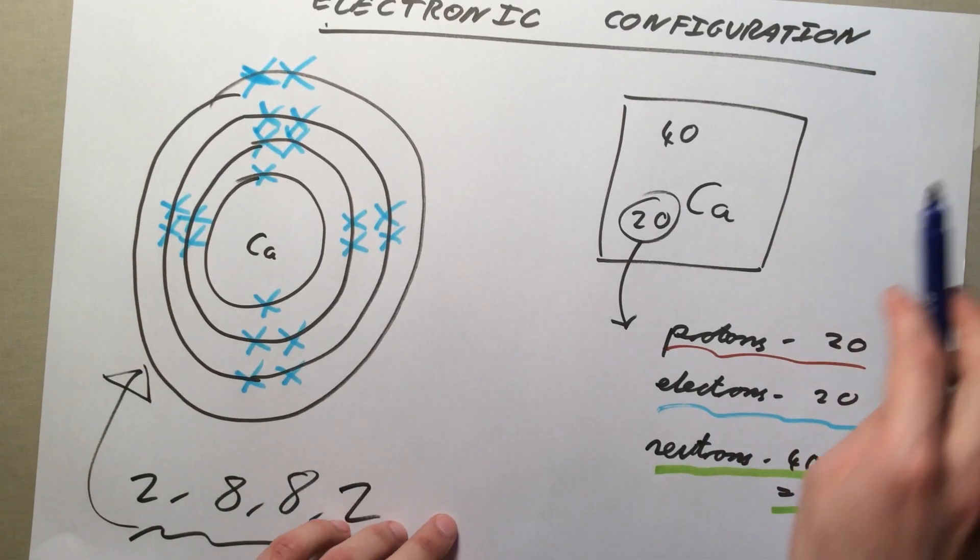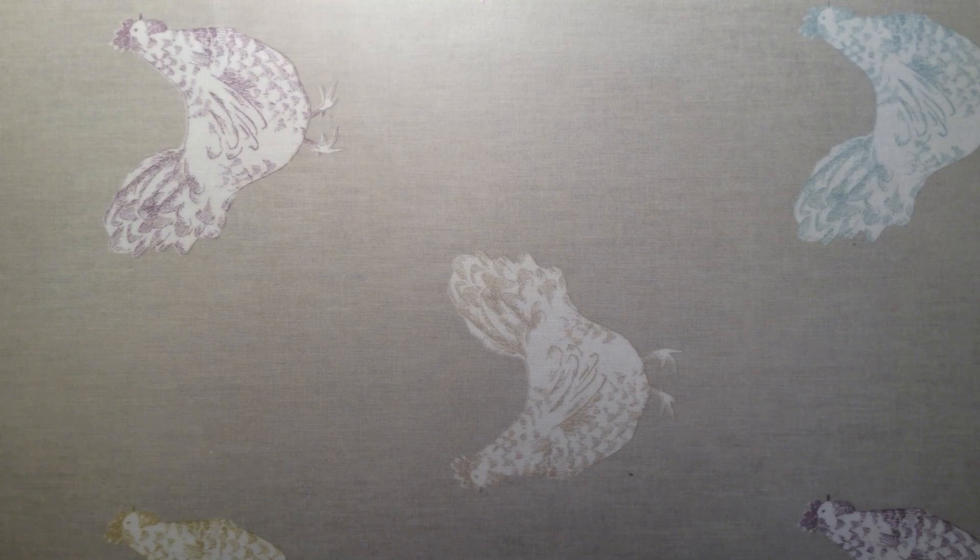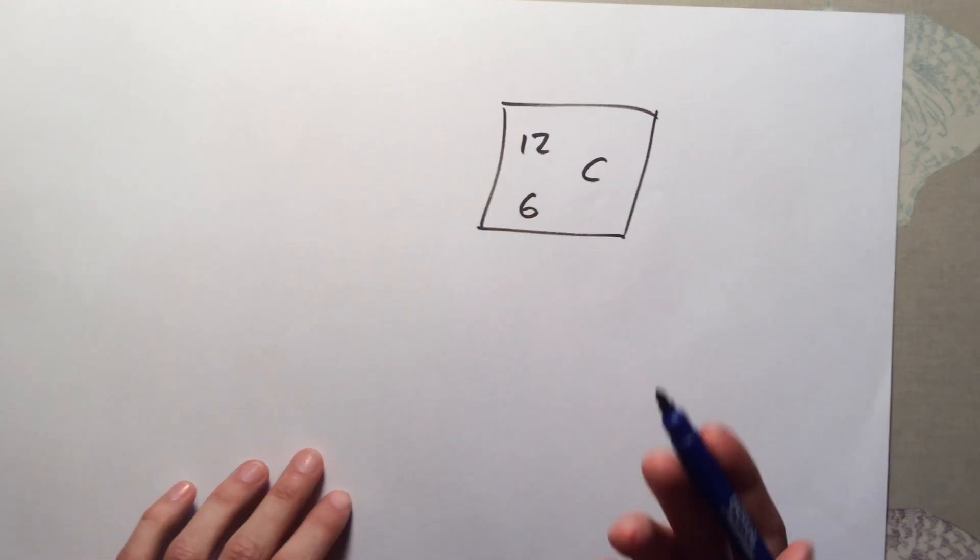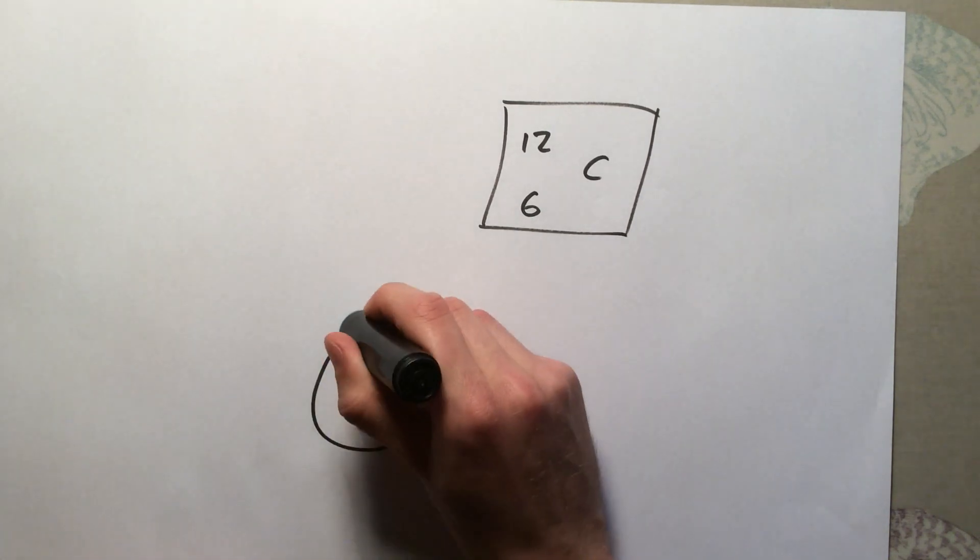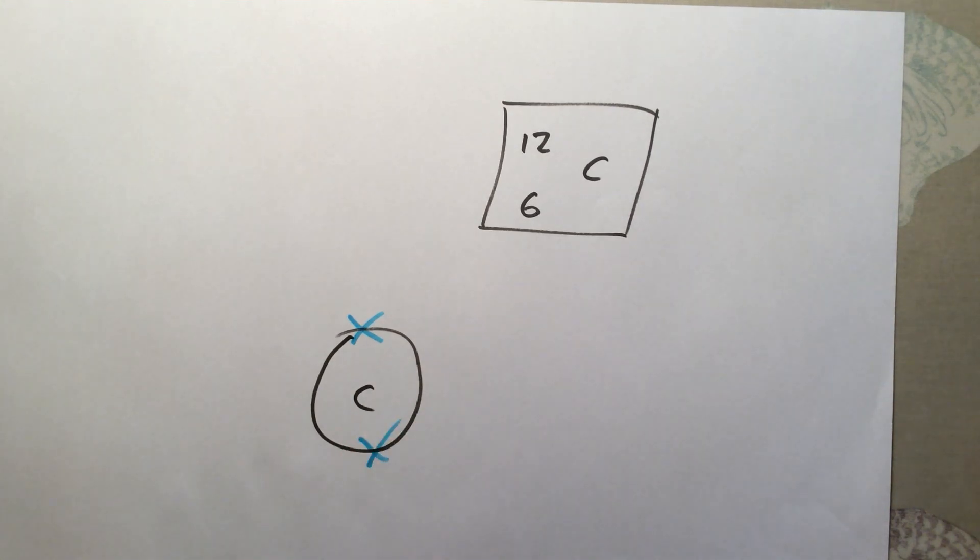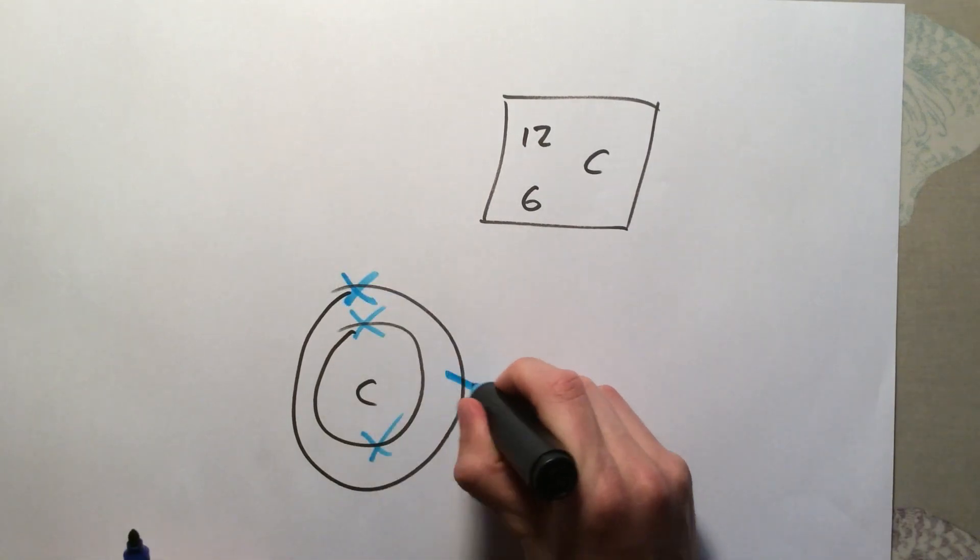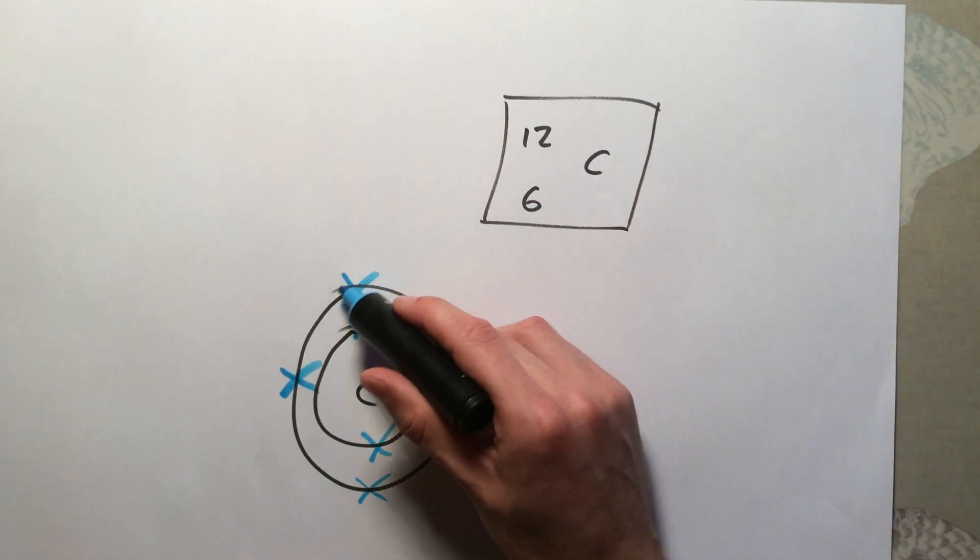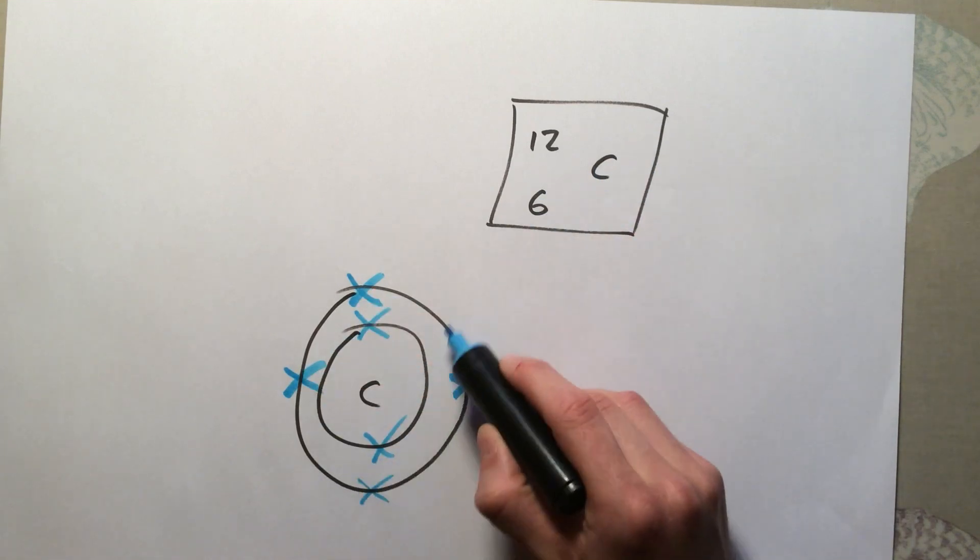Just to give you one more example, let's take carbon. Carbon's symbol is 12 over 6 C. Again, I'm just going to show my nucleus with a C. In my first shell, I can fit in two electrons. Remember, I need to get up to six here. In my second shell, I am going to fit in four. You can put them wherever you like. Remember, this actually ties in with the group of the periodic table. Carbon is in group four. If you look at it on the periodic table, that means it has four outer electrons.